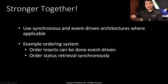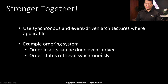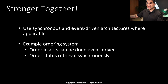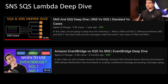Synchronous and event-driven architectures are stronger together — use each where applicable. For example, in an ordering system like amazon.com, order inserts can be event-driven: when you place an order, all you need is confirmation that the order was placed; it goes to a queue, gets processed, and if something goes wrong, it's reprocessed without you needing to resubmit. You then get an email when the order ships. But order status retrieval — when you go back to check the status — can be done synchronously. For how SNS, SQS, and Lambda work together, including dead letter queues and failed message handling, check out my other videos on SNS/SQS deep dives and EventBridge versus SQS versus SNS.